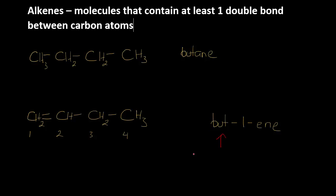The bute says that there are four carbons. The ene part of the word, or the ene part of the name, tells me that it is an alkene because there is at least one double bond.